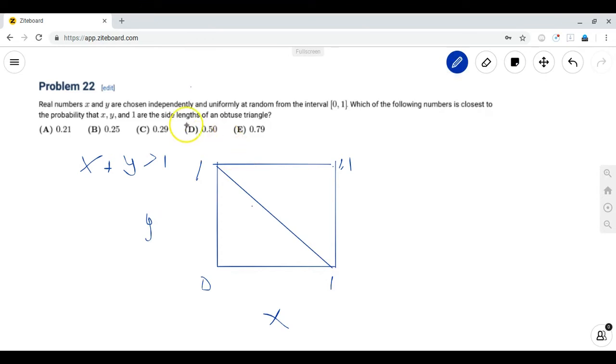Now we focus on the second restriction. We have that x and y and 1 are the sidelines of an obtuse triangle. Well, what does that mean? That means that x squared plus y squared has to be less than 1. If x squared plus y squared equals 1, then it is a right triangle. And if x squared plus y squared is greater than 1, then it is an acute triangle.